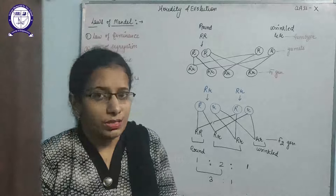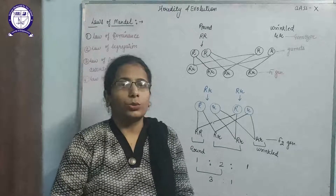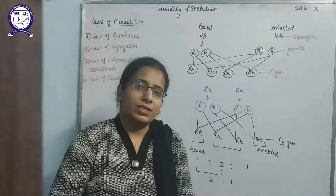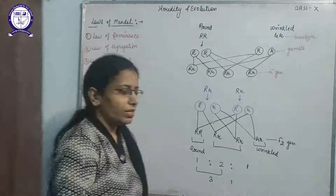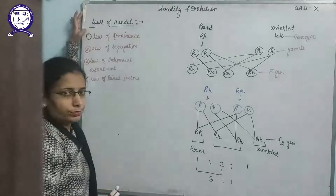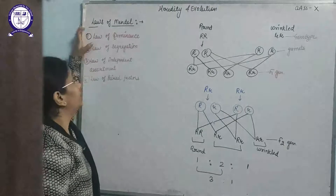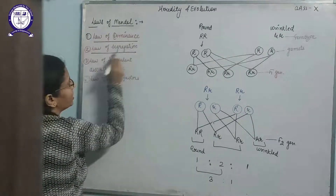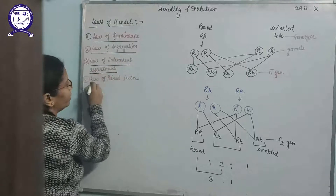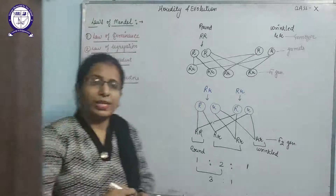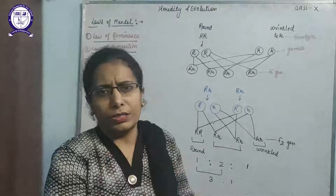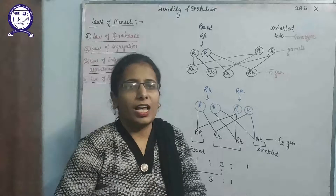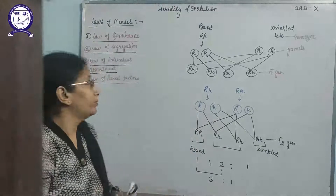But Mendel was the first person who gave clear-cut rules and principles about inheritance. That is why he was considered the luckiest person. He gave four laws on the basis of his experiments: the law of dominance, law of segregation, law of independent assortment, and law of paired factors. Many times the exam will ask you to explain any one law with the help of an illustration, that means with the help of a cross.